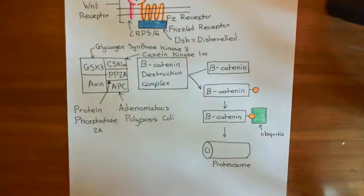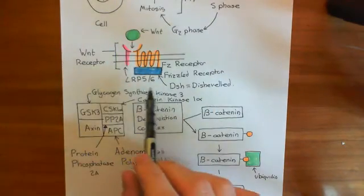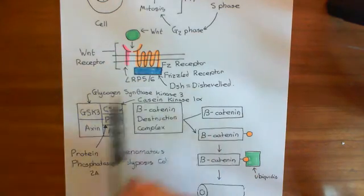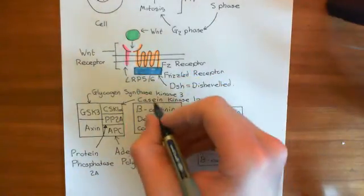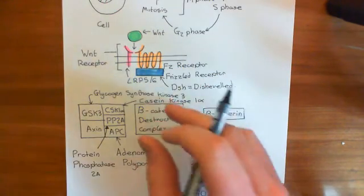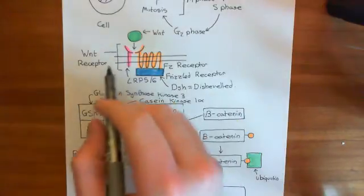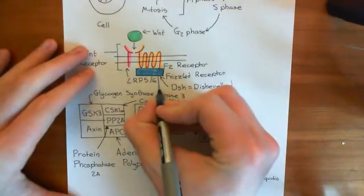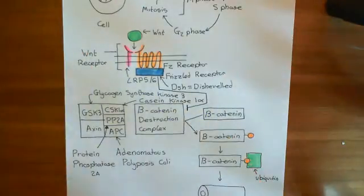When Wnt goes up in the extracellular fluid and activates the Wnt signaling pathway, it binds to the Wnt receptor consisting of LRP5/6 and the frizzled receptor. The frizzled receptor becomes active, then binds to the disheveled protein. What happens next is the beta-catenin destruction complex binds to the disheveled protein, and disheveled inactivates the beta-catenin destruction complex.